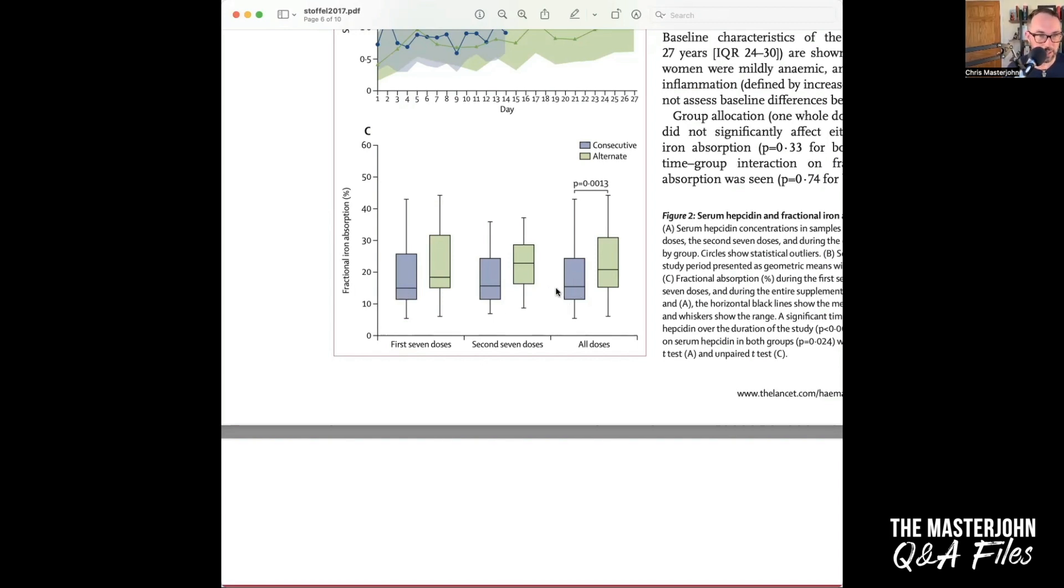If you look at this, just trace this line over, you have maybe 15% fractional absorption for the consecutive and you have about 20%. You are way under double fractional absorption. No wonder they don't show the total absorption in this paper because they have obliterated the total absorption by increasing fractional absorption less than double while they half the dose per unit time.